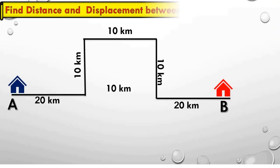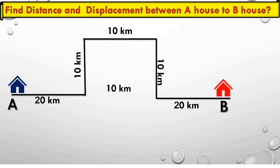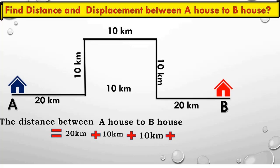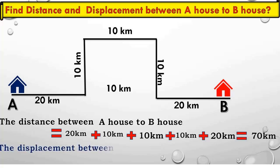So find the distance and displacement between A house to B house. From A house to B house: distance is 20 km plus 10 km, 10 km, again 10 km, 20 km. So the total distance between A house to B house is 70 km. So now the displacement between A house to B house...